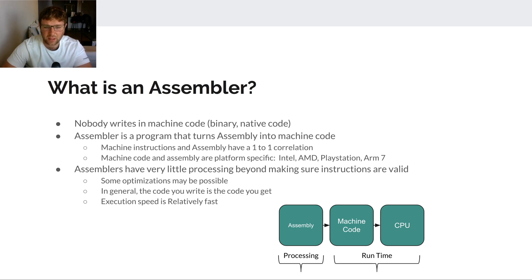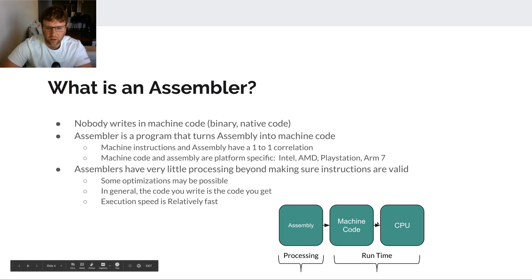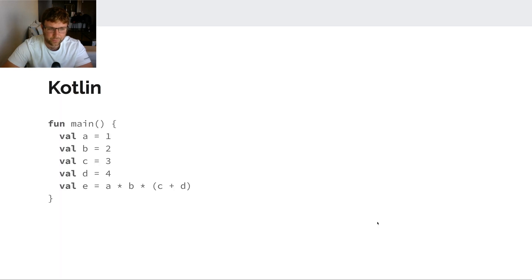An assembler is just a program that turns assembly into machine code. There's very little processing that actually happens — maybe making sure the instructions are valid, some optimizations may be possible, but in general the assembly code you write is the assembly code you get. Execution speed is relatively fast because you're writing direct native code, and the CPU is directly running that machine code at runtime.